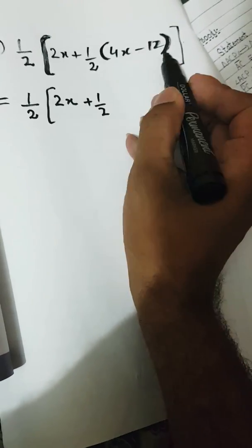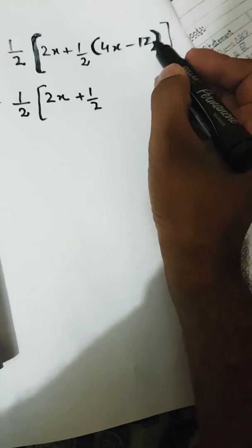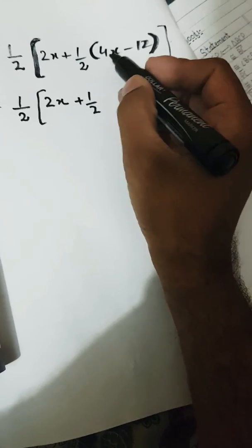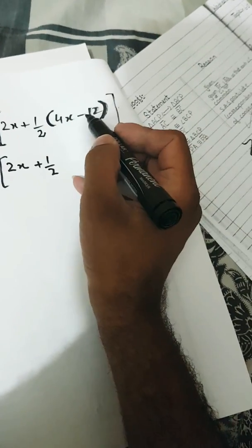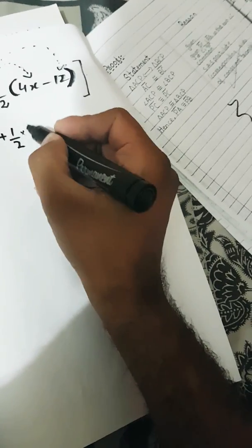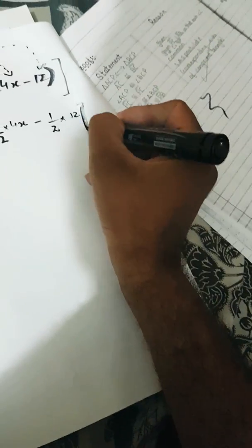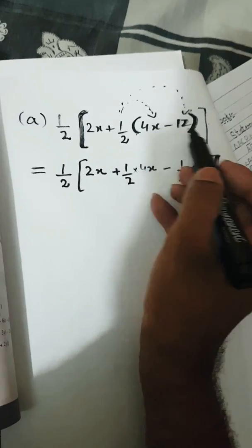You will perform the action inside this bracket. Here is 4x minus 12 — you can't subtract 12 from 4x because 4x has an x and 12 does not, so no action can be taken between these. What you have to do is multiply 1 over 2 inside the bracket: 1 over 2 multiplied by 4x, and 1 over 2 multiplied by 12. Now the smaller bracket has been eliminated because we have performed the action within it.